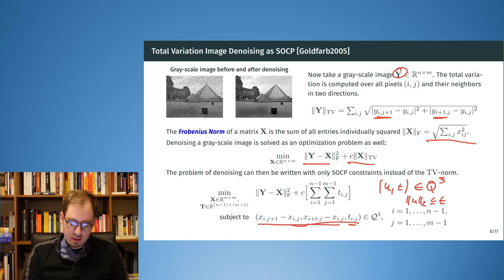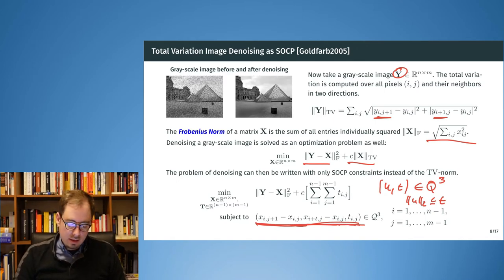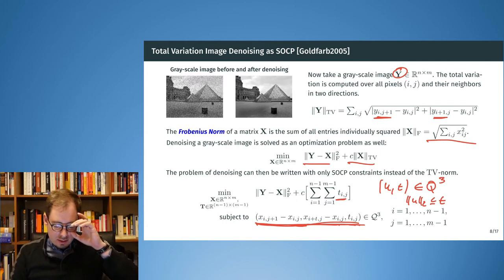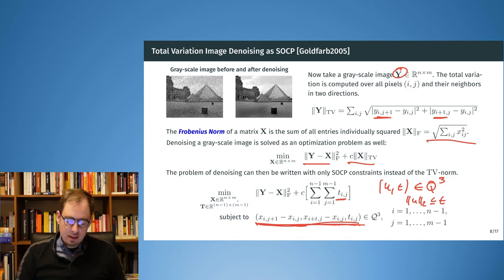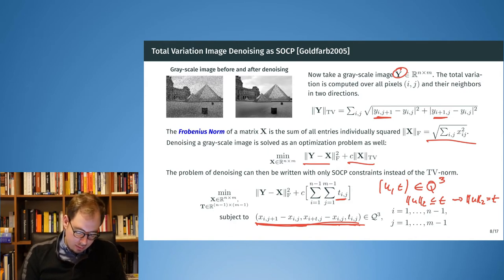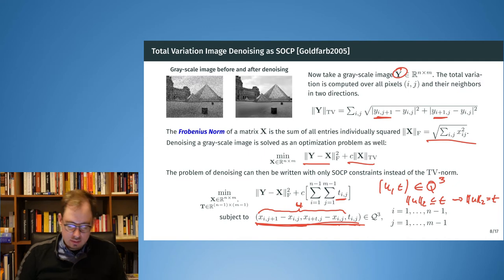For the second-order cone, if we have something U and T in the second-order cone, that means T has to be larger than the Euclidean norm of U. This exactly gives us the TV norm, because the optimizer has an incentive to push T_ij down as small as possible, and therefore in the optimum we have exactly the TV norm recovered — the Euclidean norm equals T. This U term corresponds to the pixel difference term we're looking at.